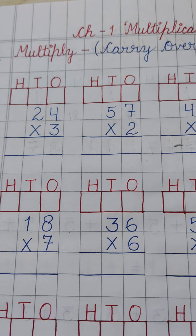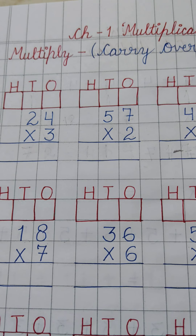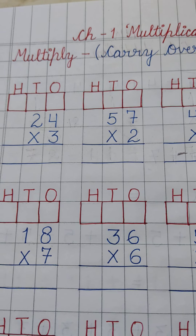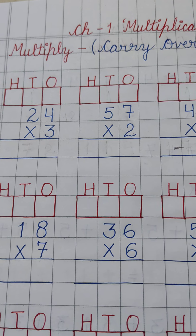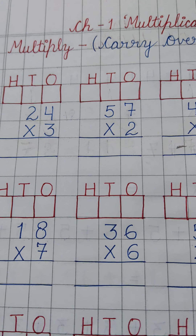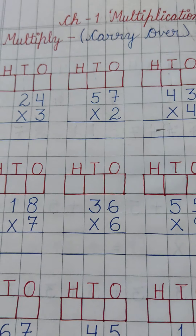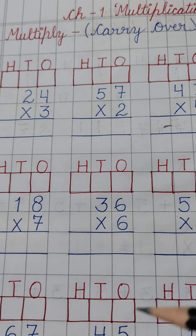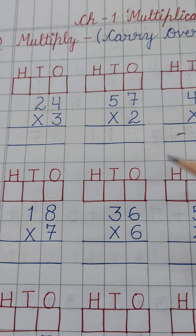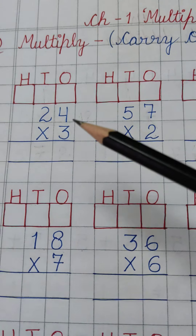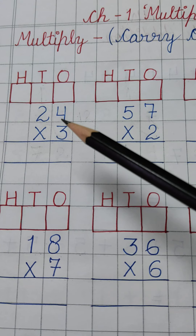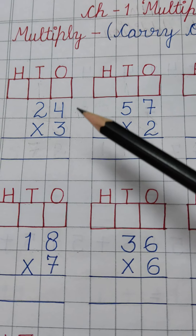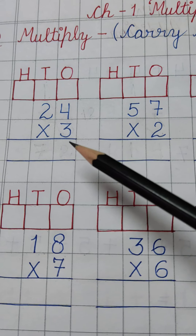We have already done the sums of addition carry over. These sums are like those — you have to copy down in the similar way I have done. First of all, the first question is 24 multiply by 3.